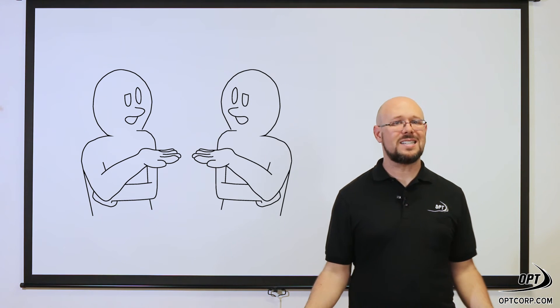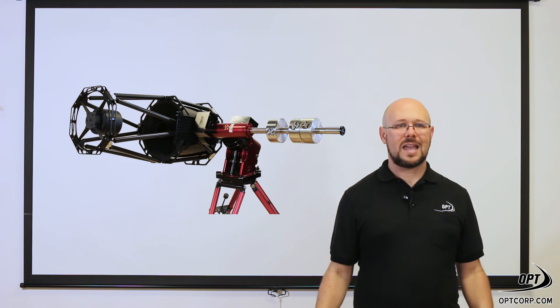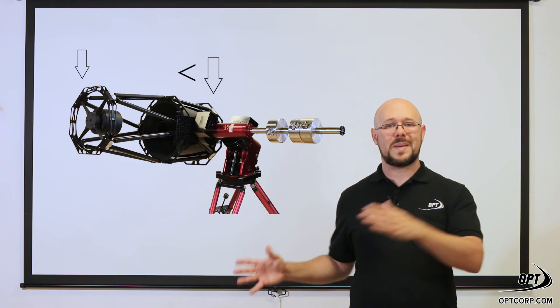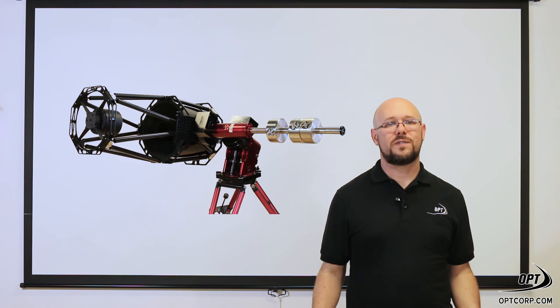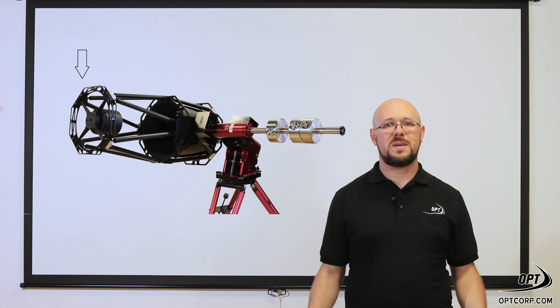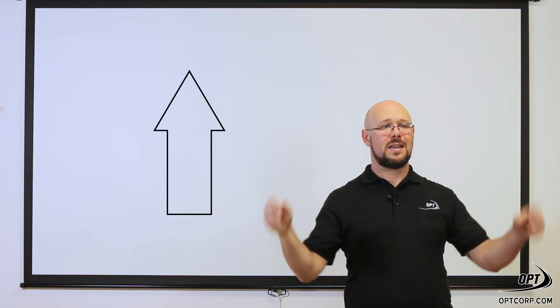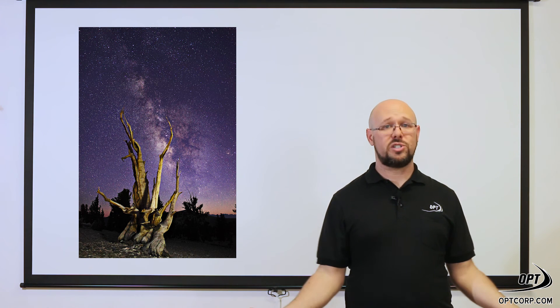Now there's no real consensus on this, but I and others at OPT like to make the telescope slightly back heavy. The main idea for this is the front of your telescope is always pointed some vector of up. That's where the stars are, that's what you want to shoot, right?